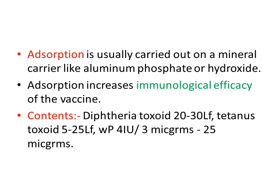The contents of DPT are: Diphtheria toxoid 20–30 LF (limes flocculation units), Tetanus toxoid 5–25 LF, and whole cell Pertussis 4 international units per 3–25 micrograms of vaccine. So diphtheria toxoid 20–30 LF, tetanus toxoid 5–25 LF, and whole cell Pertussis component 4 international units — these are the contents of the DPT vaccine.